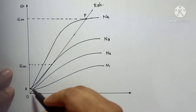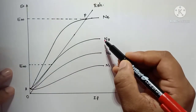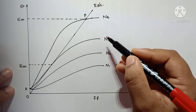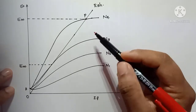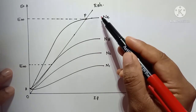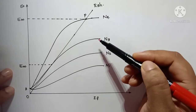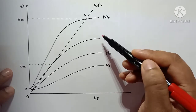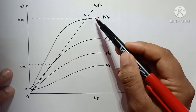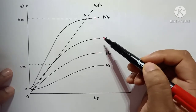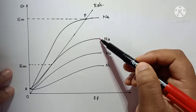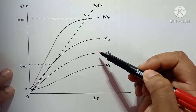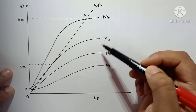If I decrease the speed, the OCC will shift. If I decrease the speed of my generator, the OCC will become like N3.